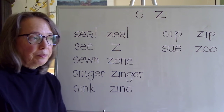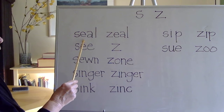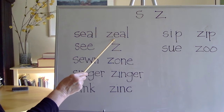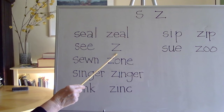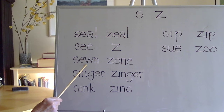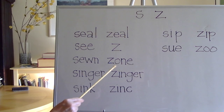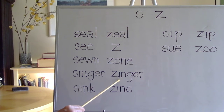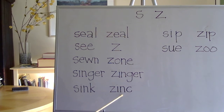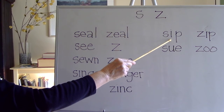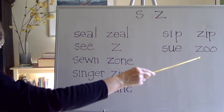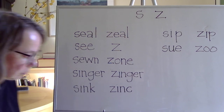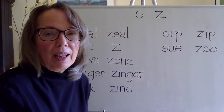Let's go through the minimal pairs. Seel. Zeal. See. Sewn. Zone. Sing. Zing. Sip. Zip. Zoo. Thank you, and thank you to my subscribers.